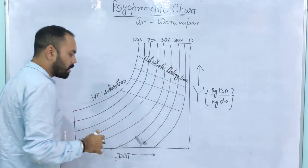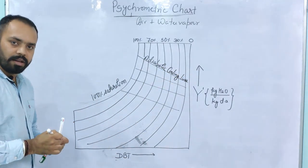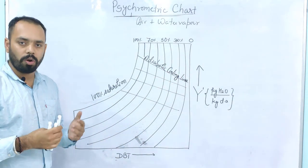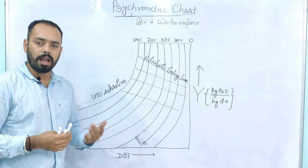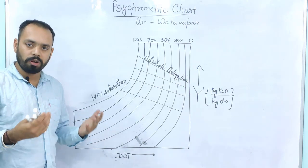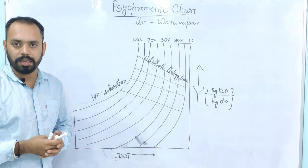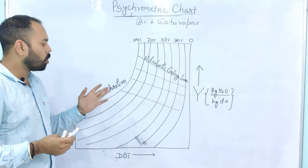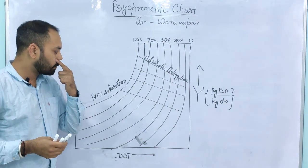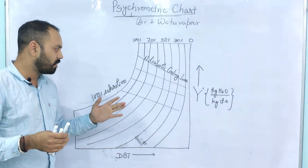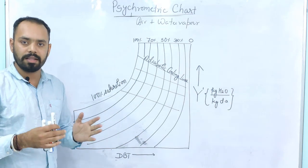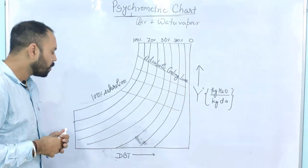There are other parameters in the psychrometric chart as well. You can also read the enthalpy values, the humid volume, and the humid heat. I am not showing all those parameters — only the frequently asked ones will be discussed because these parameters are frequently asked in the examination.